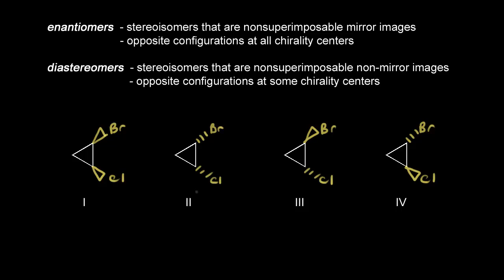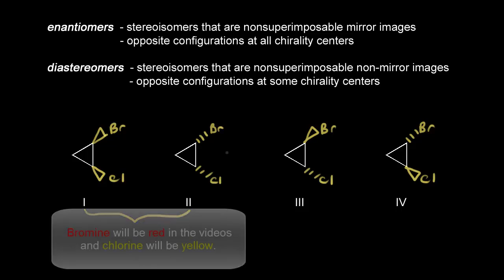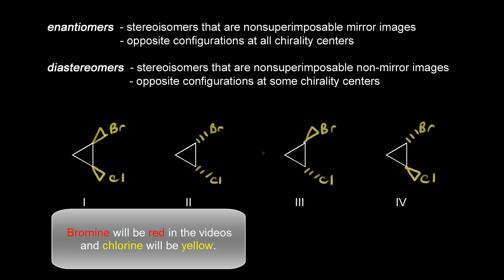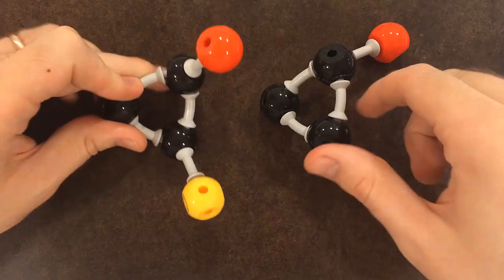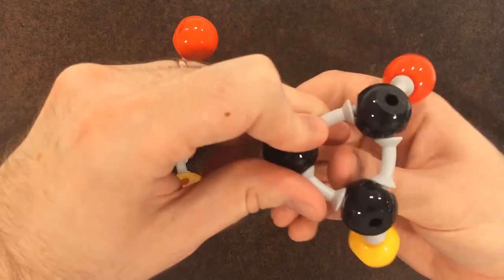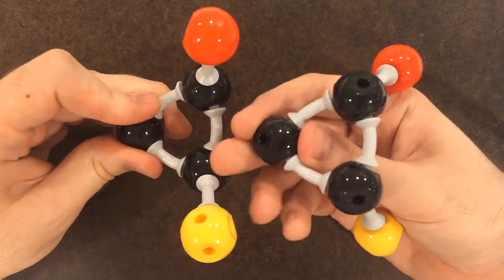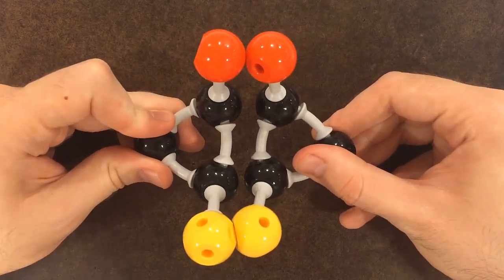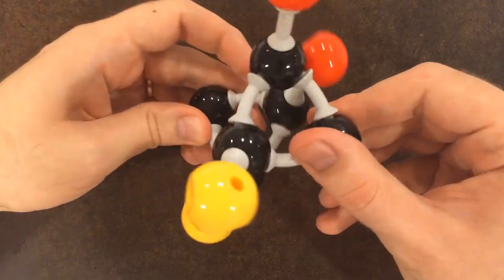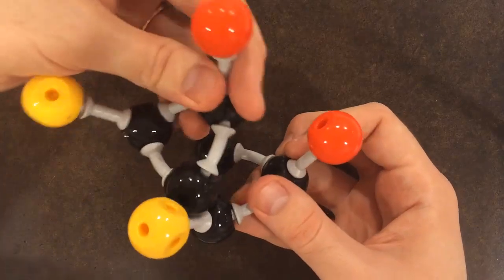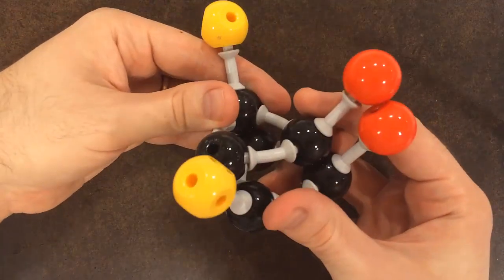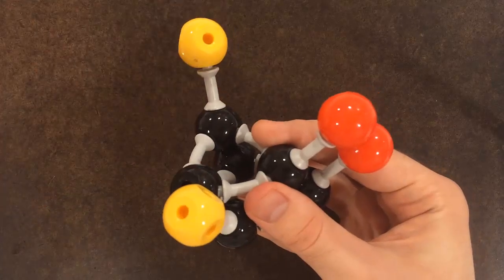Let's look at the relationships between our stereoisomers, starting with stereoisomer one and stereoisomer two. Model sets really help in stereochemistry, so we're going to look at videos for these. On the left we have stereoisomer one, with both halogens coming out at us. On the right is stereoisomer two, with both halogens going away. Rotating the one on the right, we can see they are actually mirror images of each other and non-superimposable — if you line up the chlorines, the bromines are not in the right position, and vice versa. These are enantiomers.